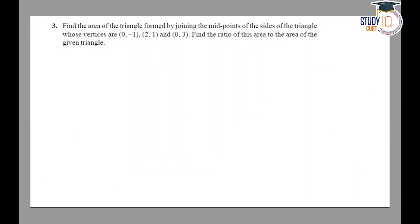Hello students, this is question number 3 from exercise 7.3 of NCERT class 10th. In this question, we have to find the area of the triangle formed by joining the midpoints of the sides of the triangle whose vertices are (0, -1), (2, 1), and (0, 3). We also have to find the ratio of this area to the area of the given triangle.